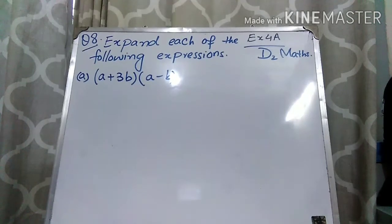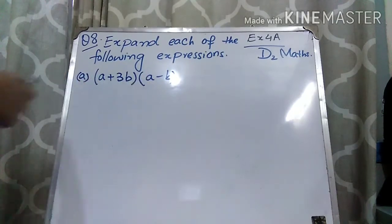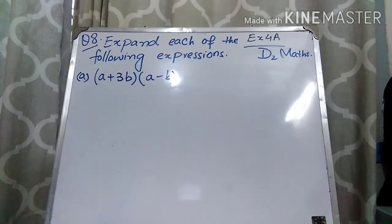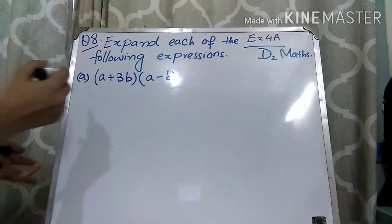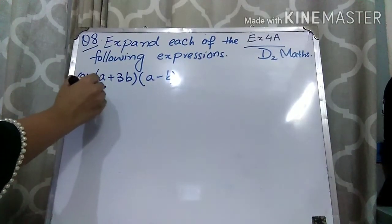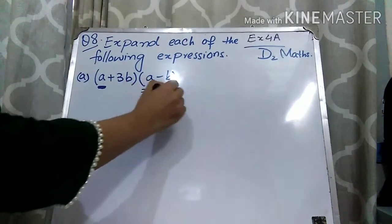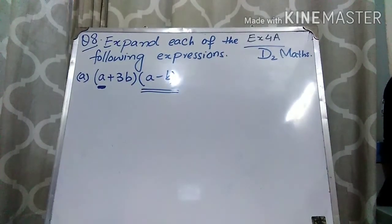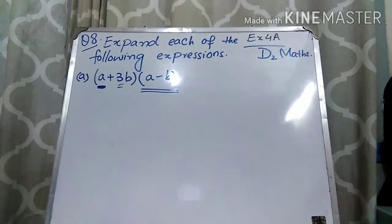Okay, part A, question number 8 is: expand each of the following expressions. Different expressions are given, you just need to expand them. Part A is (A + 3B)(A - B). As you can see, these are two brackets. It means that you first have to multiply the first number with the whole second bracket, and then you have to multiply the next number with the whole second bracket.